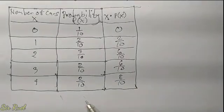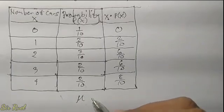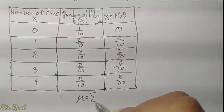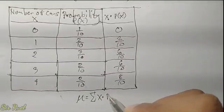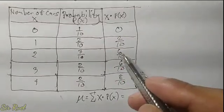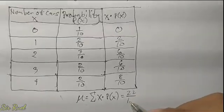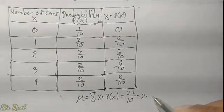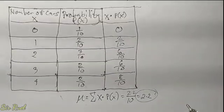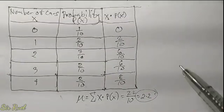Now we need to get the sum. The symbol for mean is mu, or the summation of x times p of x, which equals 0 plus 2 plus 6 plus 6 plus 8, giving us 22 over 10, or 2.2. So our mean is 2.2.